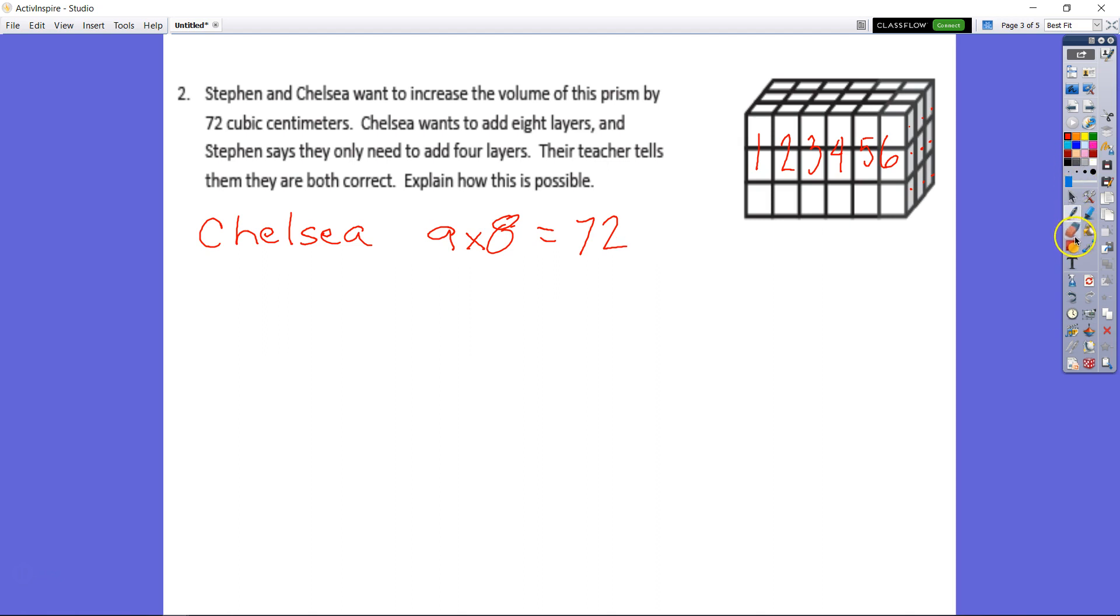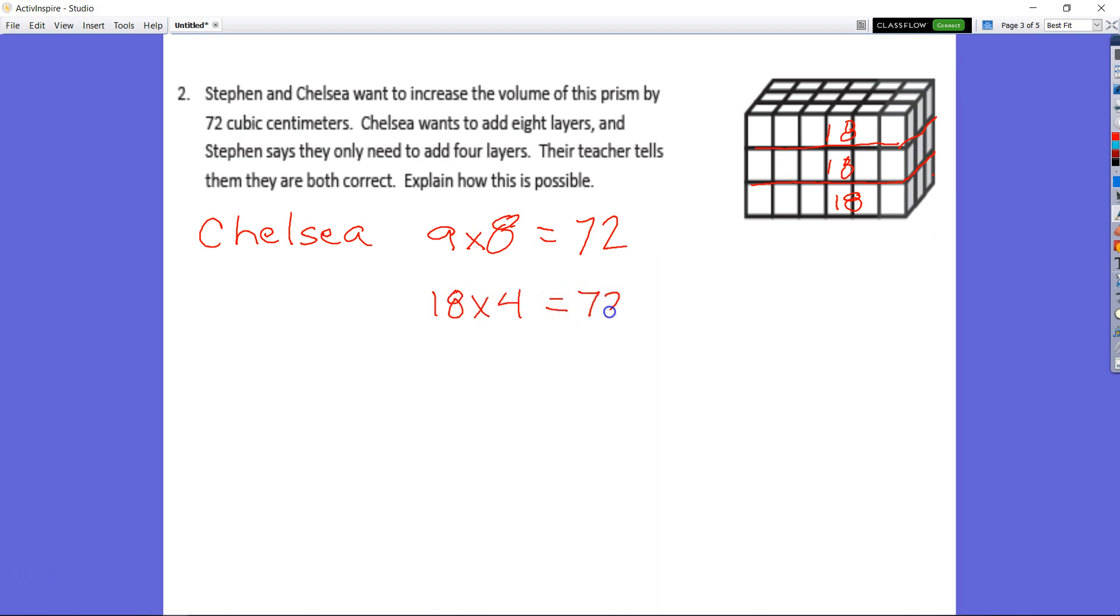And Stephen, on the other hand, Stephen is looking at it as he sees 18 layers. He's looking at the layers this way. So he sees one layer of 18, two layers of 18, three layers of 18. So he's going to add four more layers of 18, and 18 times four also equal to 72. So if Stephen was to add four more layers of 18, he would also have added on, increased the volume by 72 cubic centimeters. So either one would be correct.